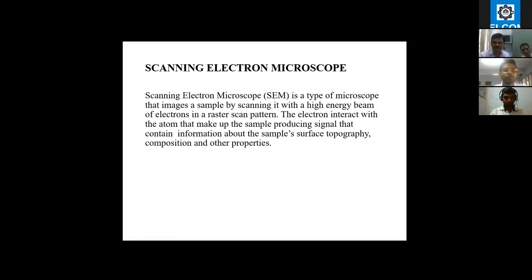Scanning electron microscopy: SEM is a type of microscope that images a sample by scanning it with high-energy electrons in a raster scan pattern. The electrons interact with the atoms that make up the sample, producing signals that contain information about the sample surface topography, composition, and other properties.